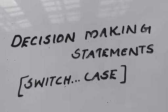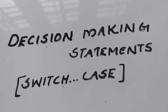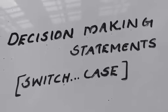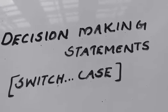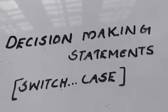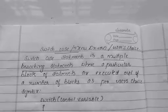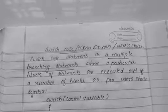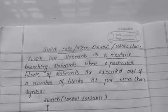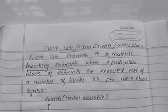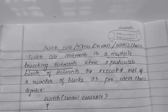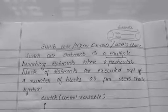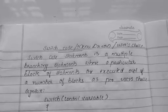Welcome back students. Today in this class we are going to study about decision-making statements. We already studied different types of decision-making statements, and among those we are going to study about switch case statements. This switch case statement is also known as a multiple branching statement, where a particular block of statements is executed out of a number of blocks as per the user's choice. It is also known as a menu driven program.